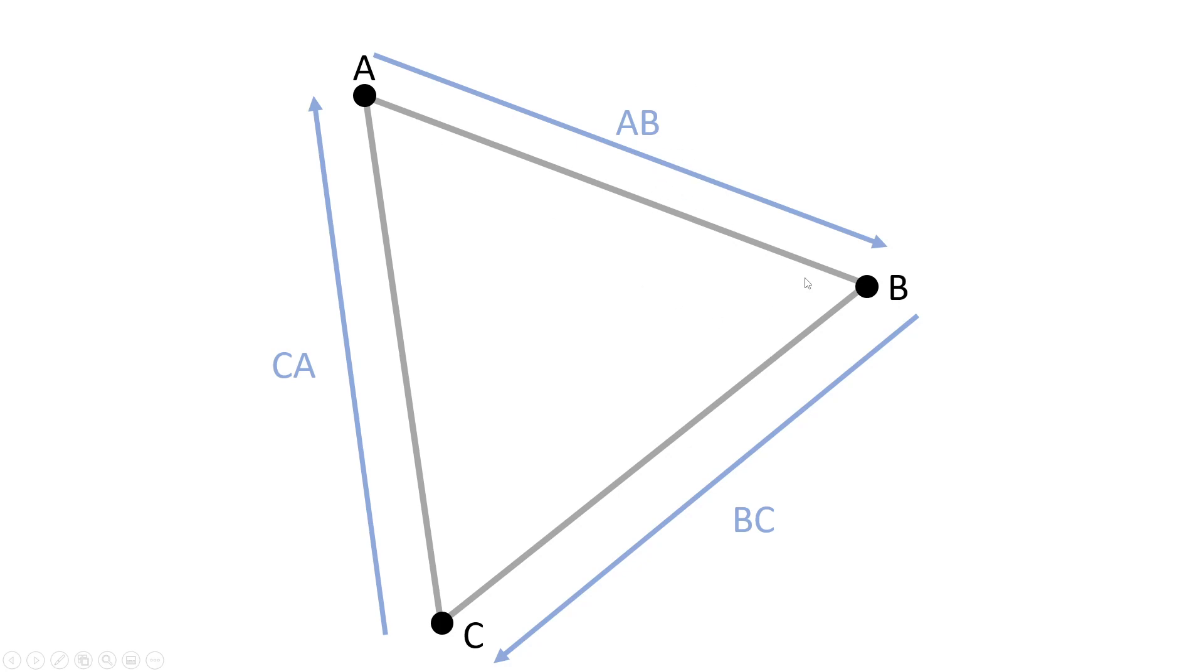To calculate them we need to have the direction from one vertex to the other vertex. So in this case it's going to be A to B for this vector.